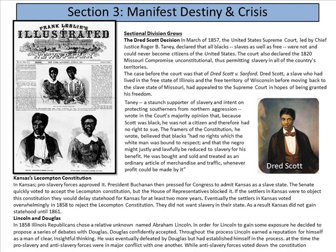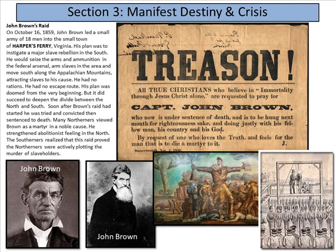With growing tensions, John Brown's raid on October 16th, 1859: John Brown led a small army of 18 men into the small town of Harpers Ferry, Virginia. His plan was to instigate a major slave rebellion in the South — he would seize arms and ammunition from the federal arsenal, arm slaves in the area, and move south along the Appalachian Mountains, attracting slaves to his cause. He had no rations and no escape route, so his plan was doomed from the very beginning. But it did succeed in deepening the divide between the North and the South. Brown was tried, convicted, and sentenced to death. Many Northerners viewed Brown as a martyr, strengthening abolitionist feeling, while Southerners saw the raid as proof that Northerners were actively plotting to murder slaveholders.